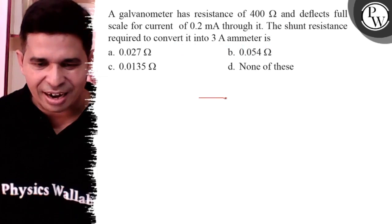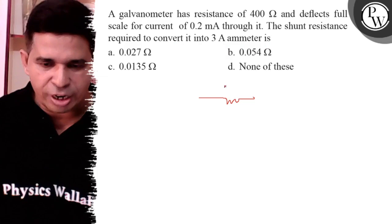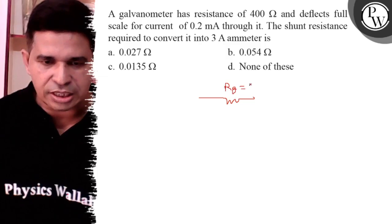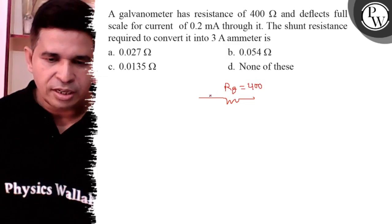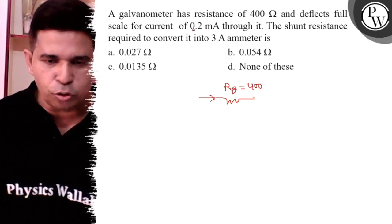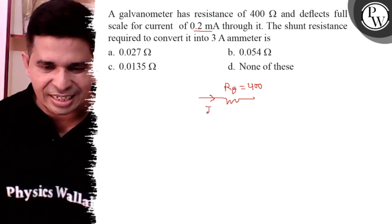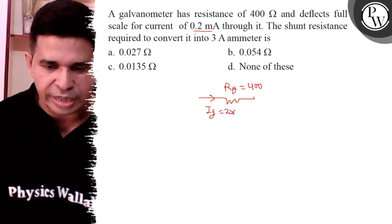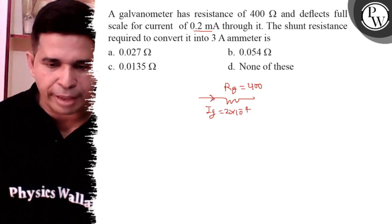First, sketch the diagram. What is 400 ohm? RG, resistance of galvanometer, it is 400 ohm. What is the IG? IG is 0.2 mA, so it is 2 into 10 to the power minus 4 ampere.